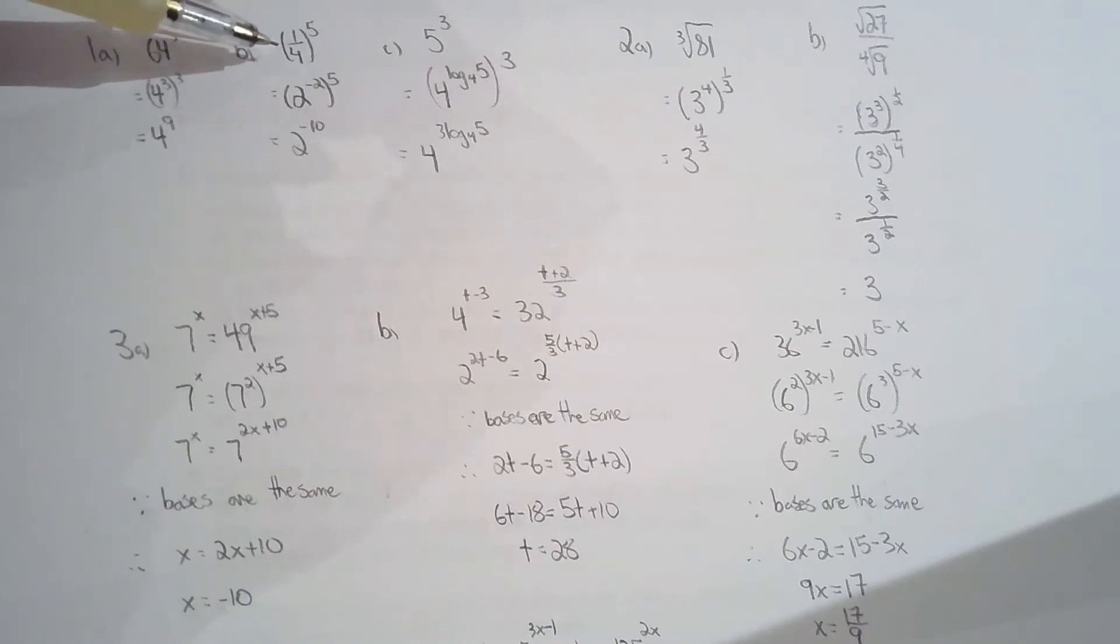For B, basically the same question. You want to change 1 quarter to a base of 2. So 1 quarter is the same as 2 to the power of negative 2.